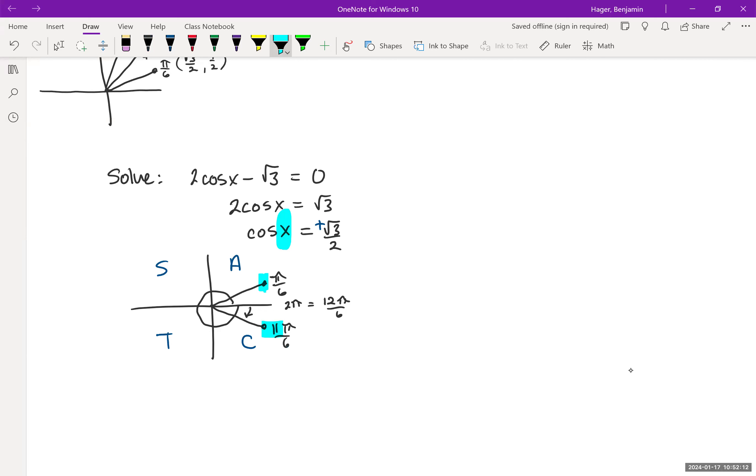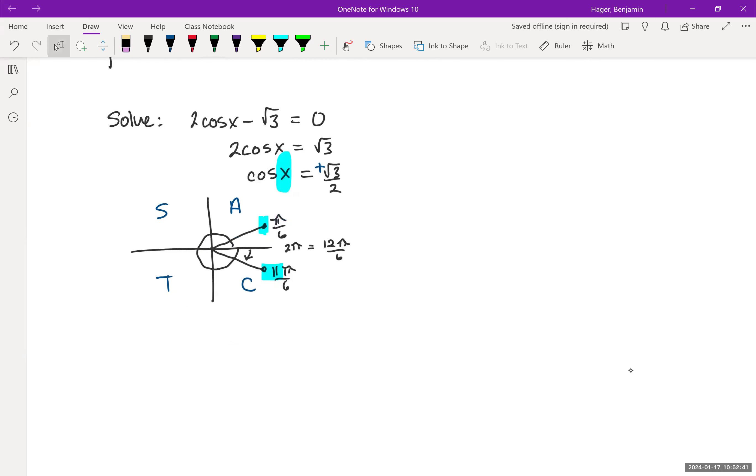There's actually infinitely many solutions because of co-terminal angles. Any angle, no matter how many laps around the circle you take, if it stops on that terminal side, then cosine of that angle is going to yield √3/2. Since there's infinitely many co-terminal angles, there's infinitely many solutions.